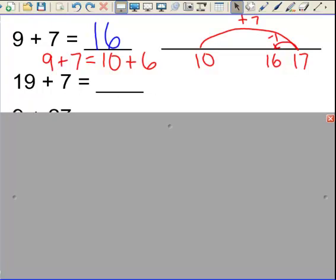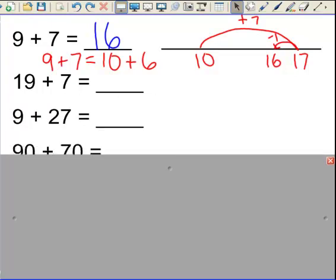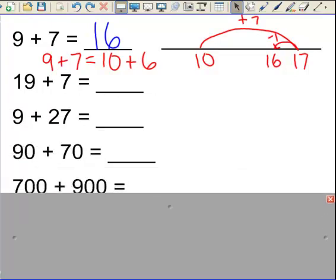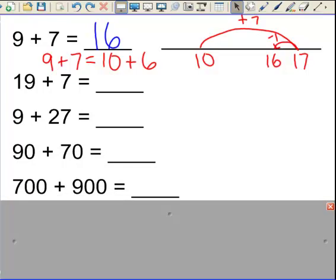Here are some other problems in my string. 9 plus 27, 90 plus 70, and 700 plus 900.